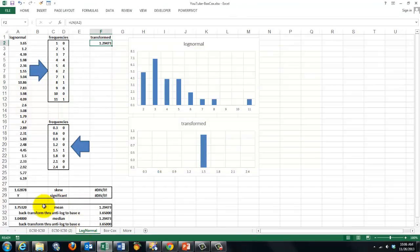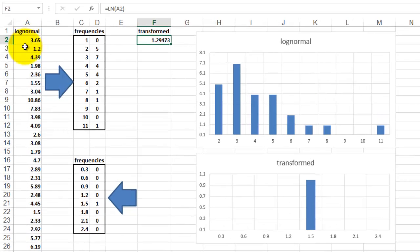To just show you another kind of transformation, in this case, my values, my observations, are of this type. I calculated their frequencies with the frequency function. And I found this distribution, which is definitely not a normal distribution.